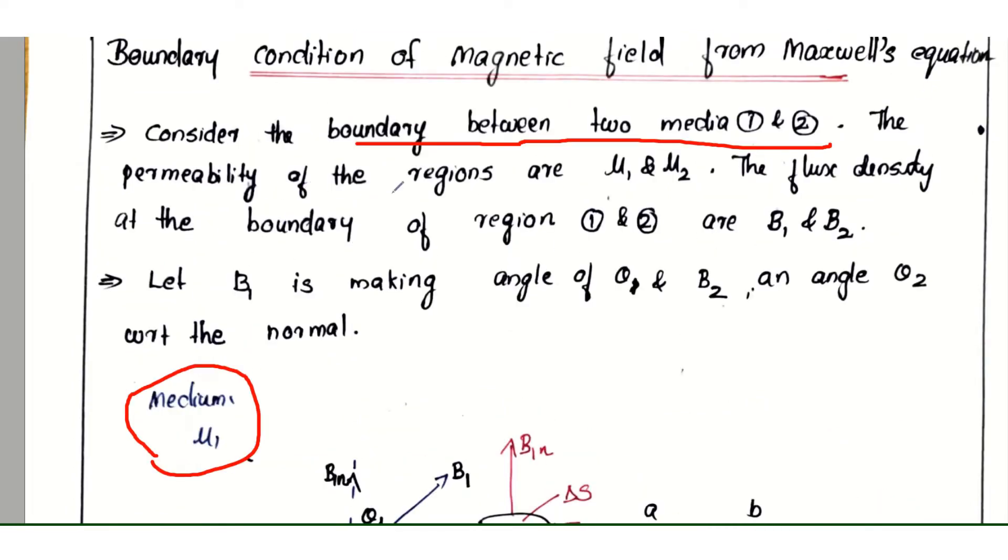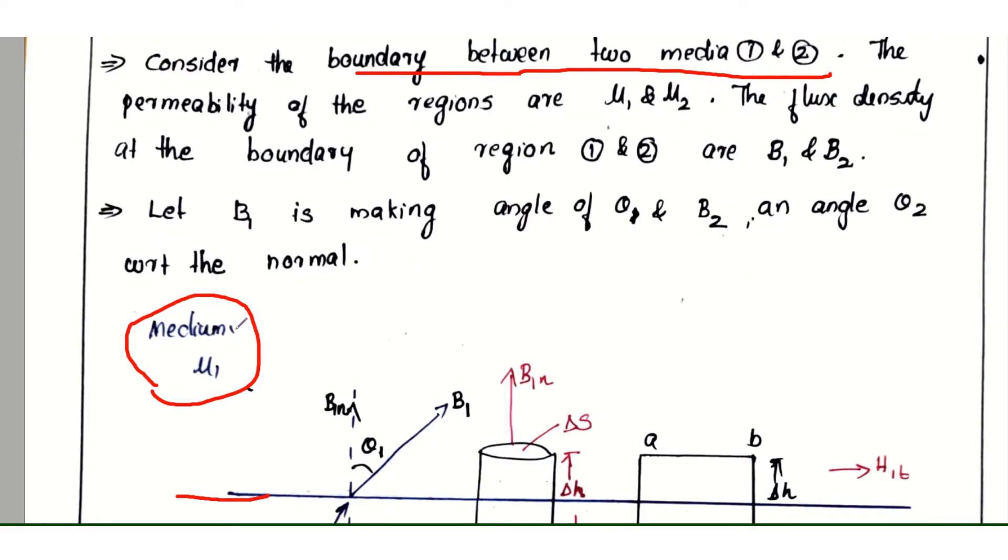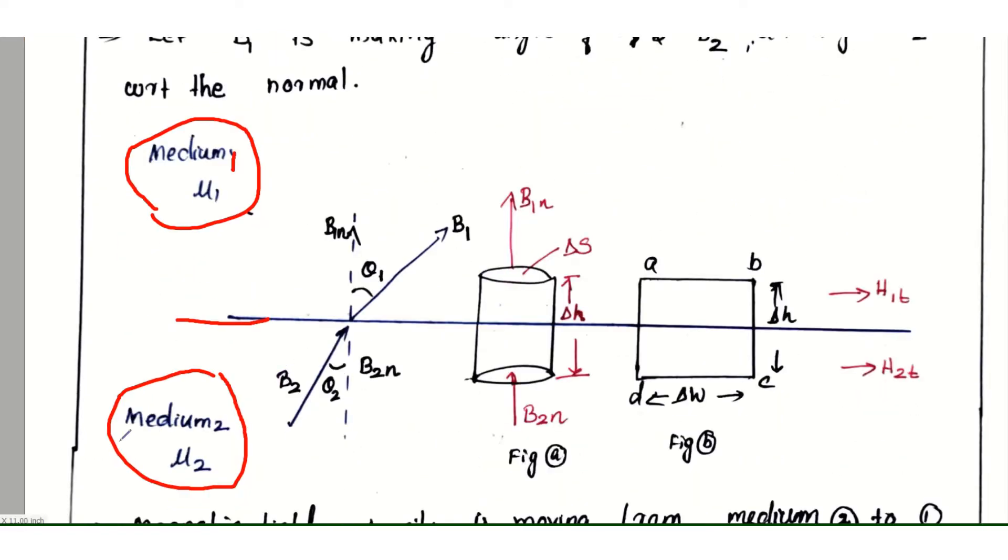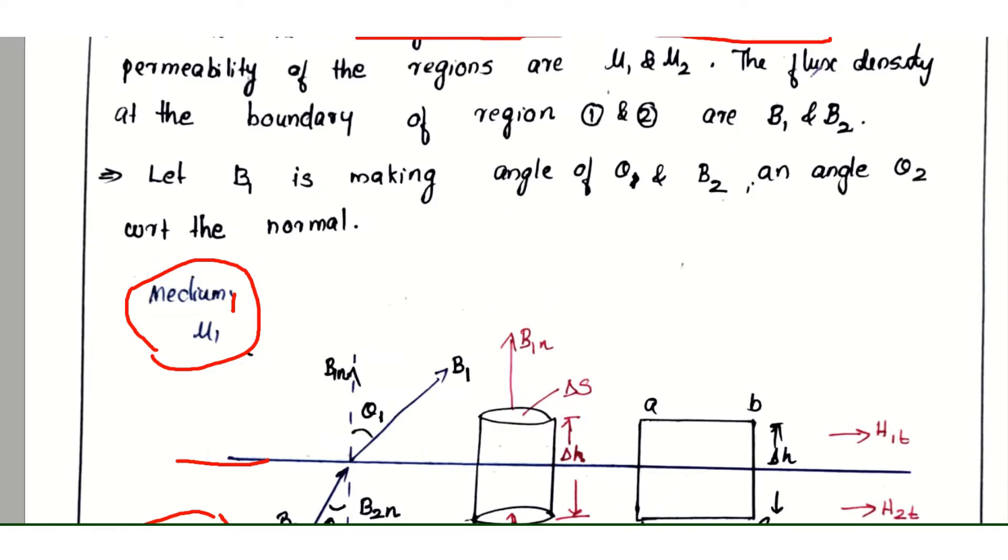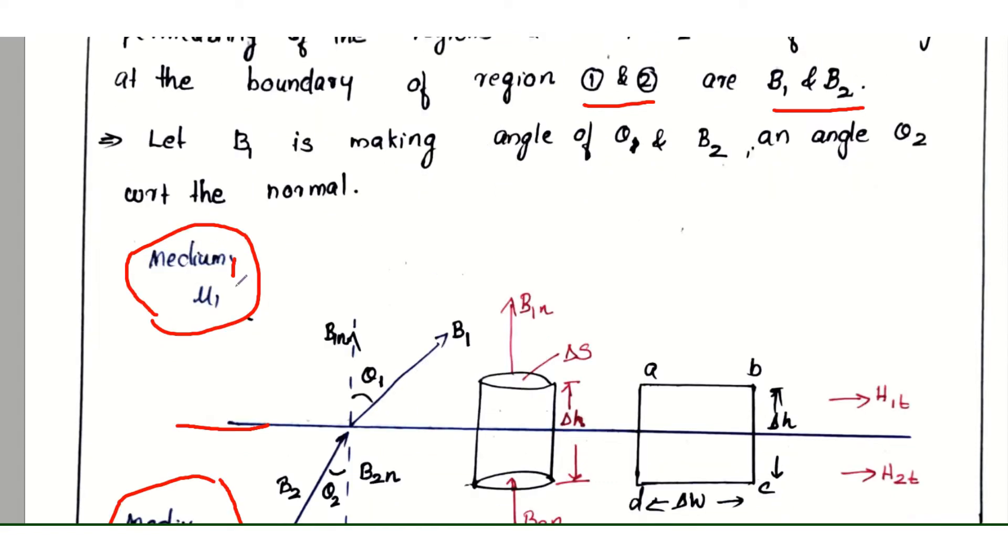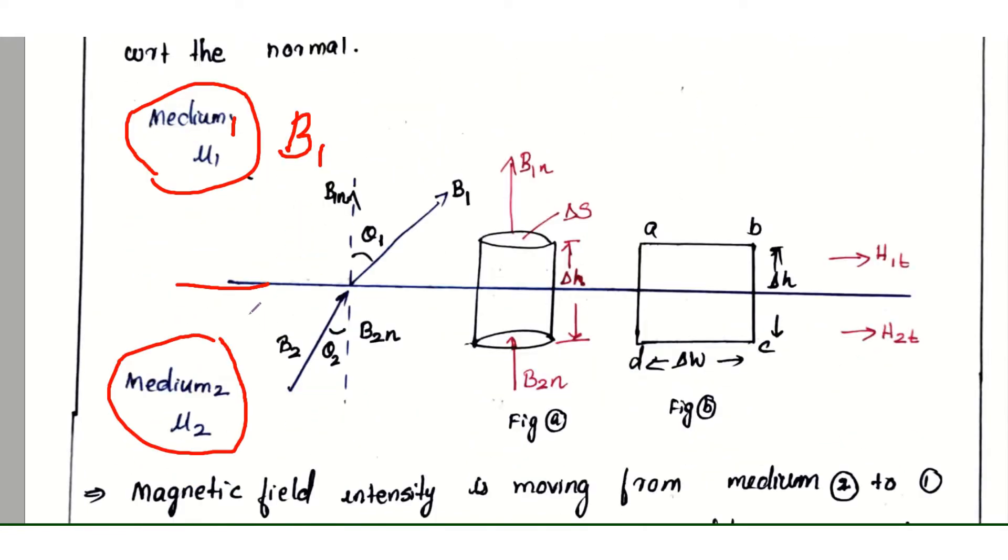The permeability of the regions are μ₁ and μ₂. Medium 1 has permeability μ₁, medium 2 has permeability μ₂. The flux density at the boundary of regions 1 and 2 are B₁ and B₂ respectively.